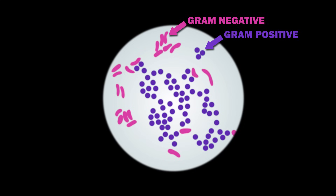Note that gram-positive bacteria also pick up the pink color of the counterstain. However, this is not visible when they are dyed with the darker purple color of the crystal violet stain.